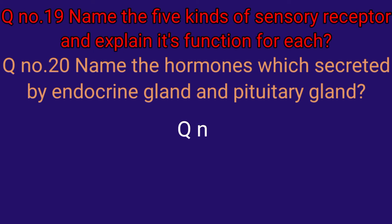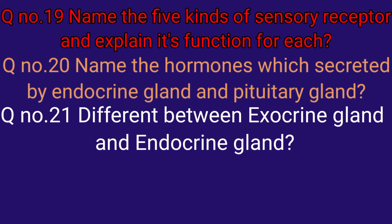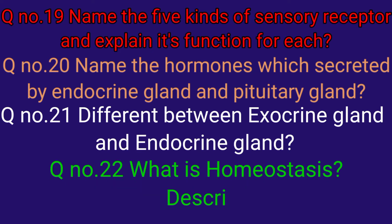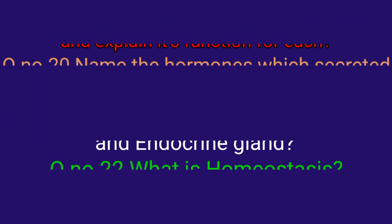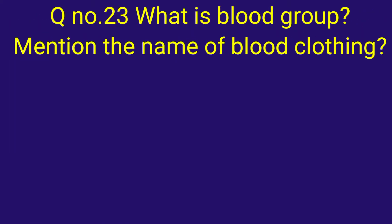Question number twenty-one: differentiate between exocrine gland and endocrine gland. Question number twenty-two: what is homeostasis? Describe the negative feedback mechanism. Question number twenty-three: what is a blood group? Mention the name of blood clotting factors.